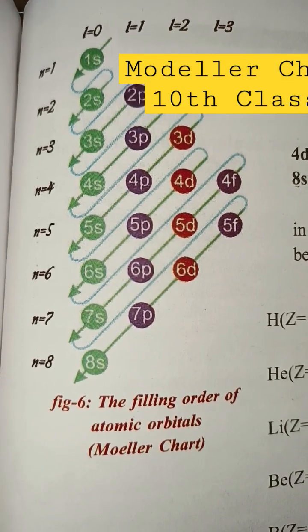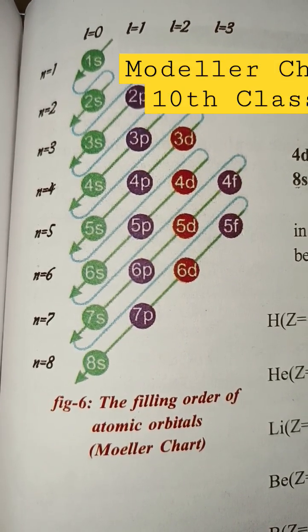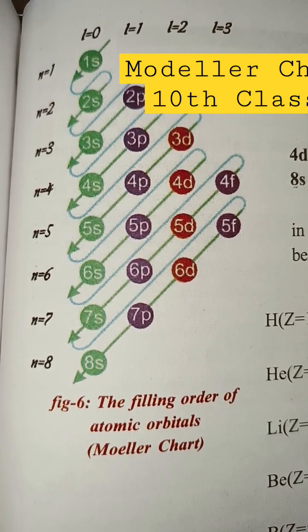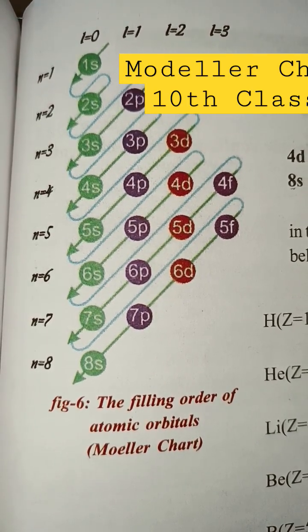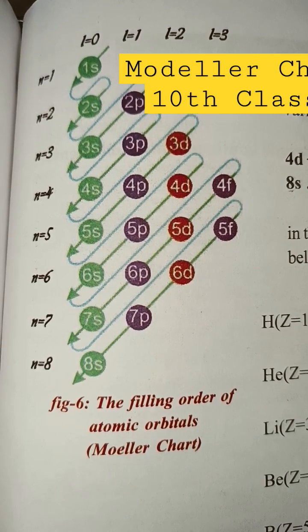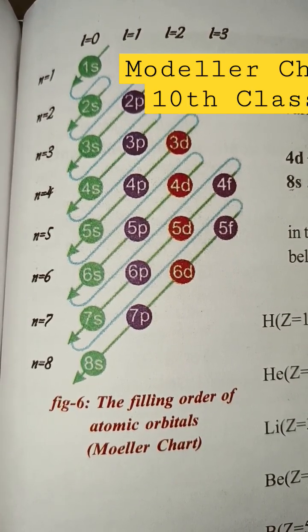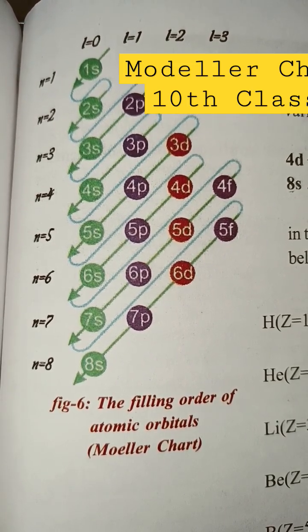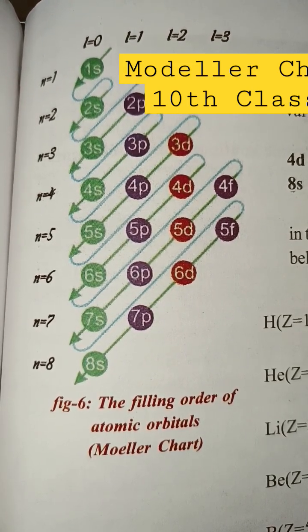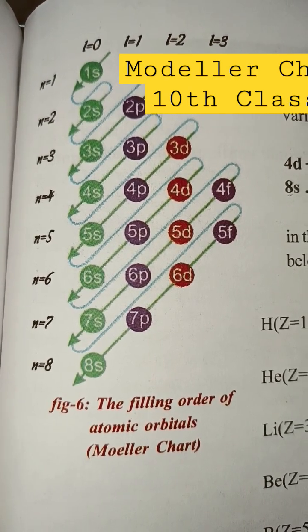The filling order of atomic orbitals is shown using the Moeller chart. The following diagram shows the increasing value of n plus l. The ascending order of energies of various atomic orbitals is given below.